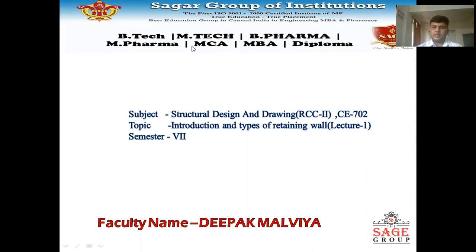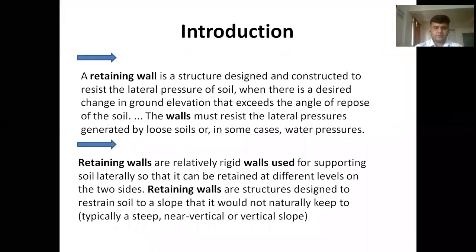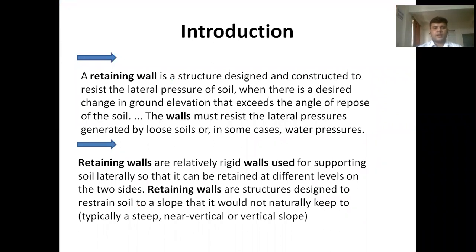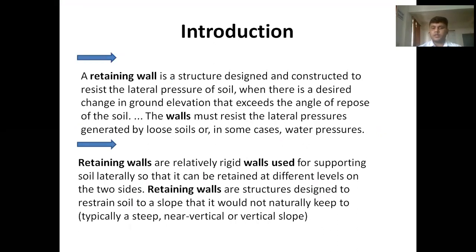Hello everyone, this is Deepak Malgay, and today we are going to discuss the design of RCC structures — advanced RCC introduction and types of retaining walls. A retaining wall is a structure designed and constructed to resist the lateral pressure of soil when there is a desired change in ground elevation that exceeds the angle of repose of the soil. The wall must resist the lateral pressure generated by loose soil, or in some cases, water pressure also.